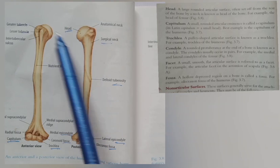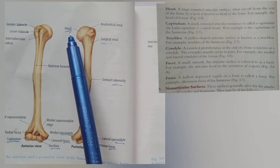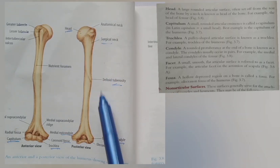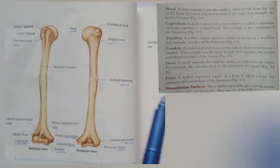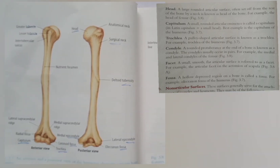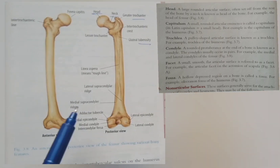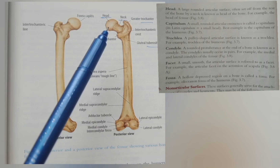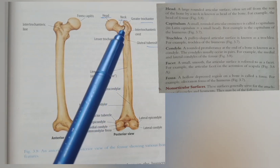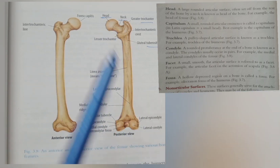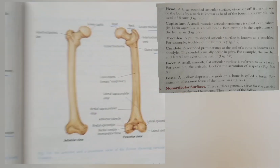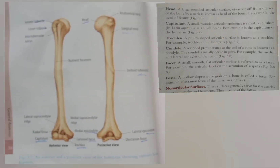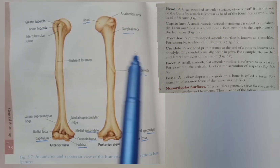First of all, we have a head. The head is a large round surface which is separated from the neck. In the femur example, you have a head, a neck, and a shaft. Now, we have two ways to look at the neck — one is anatomical neck and one is surgical neck.